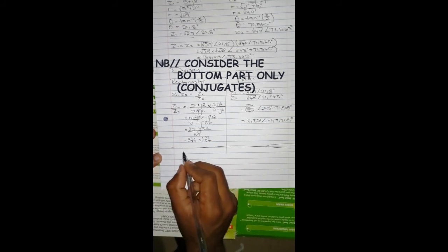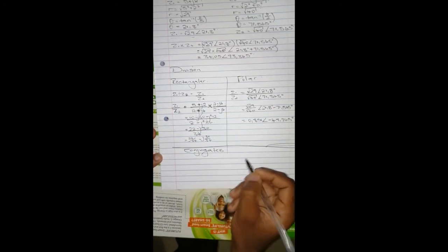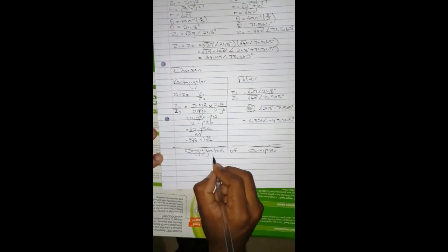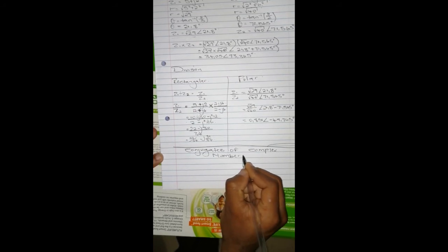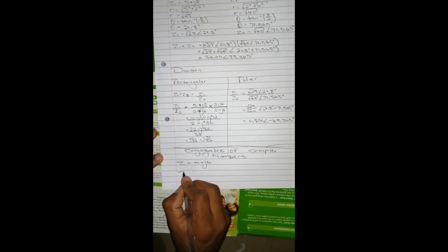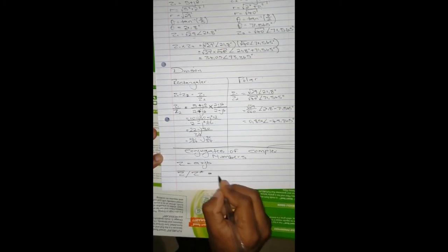Conjugates of complex numbers. A conjugate of a complex number, let's say you're given a complex number Z equals 'a' plus 'bj', the complex conjugate is written as Z bar and it's given by 'a'...